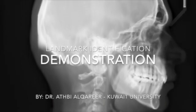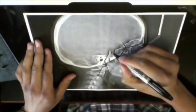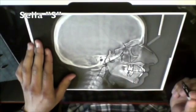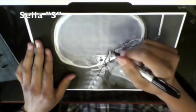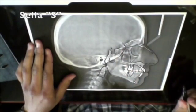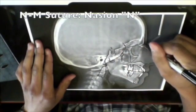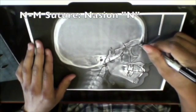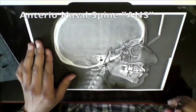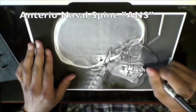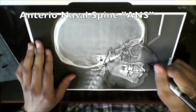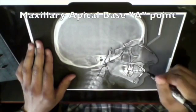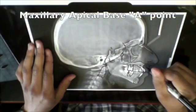You are now ready to identify landmarks. So start by finding sella which is the middle of the sella turcica outline, the midpoint, the exact midpoint, then N which is nasion which indicates the most anterior part of the frontonasal suture. Next, A point and ANS. ANS is the most anterior part of the maxilla. A point is the deepest point on the concavity in the anterior portion of the maxilla.